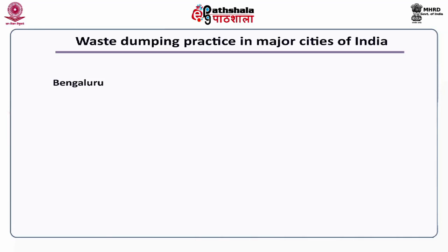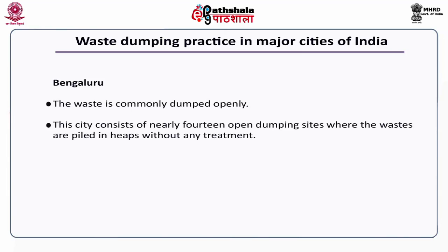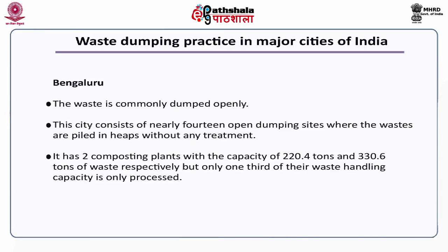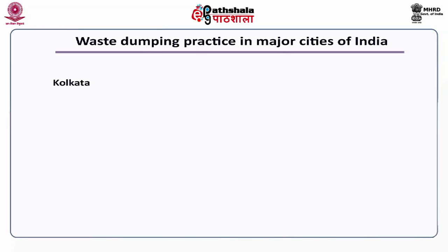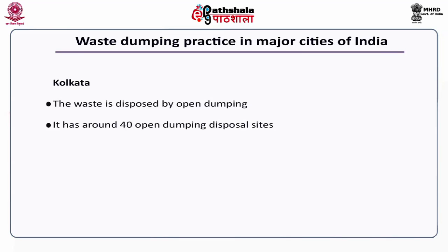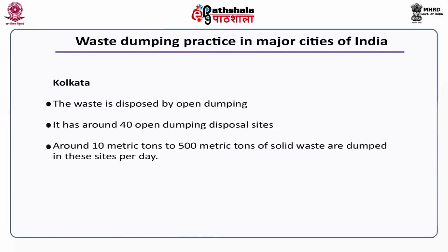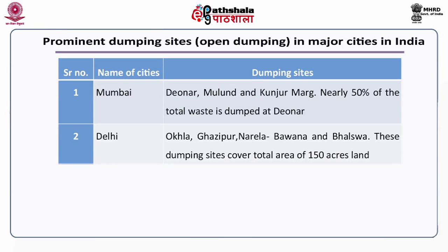Looking at waste dumping practices in major Indian cities: Bengaluru has nearly 14 open dumping sites where wastes are piled in heaps without any treatment. It has two composting plants with capacities of 220.4 tons and 330.6 tons of waste respectively, but only one third of their waste handling capacity is used. In Kolkata, waste is disposed by open dumping at around 14 open dumping disposal sites, where approximately 10 to 500 metric tons of solid waste is dumped.